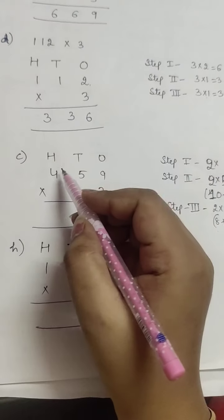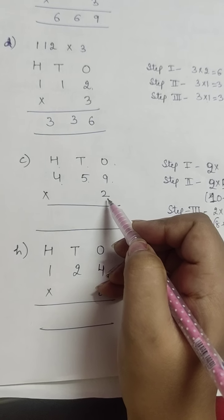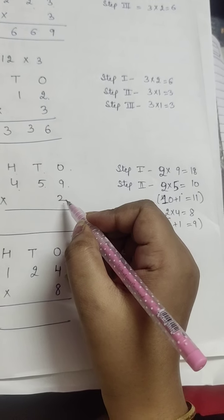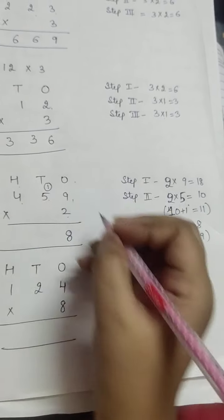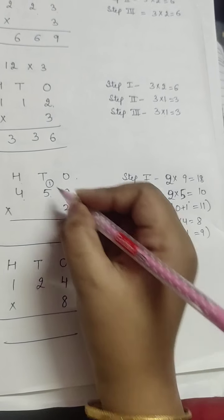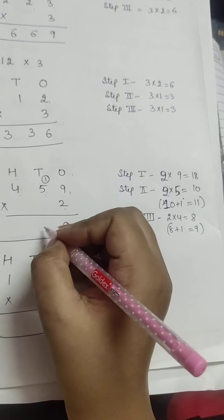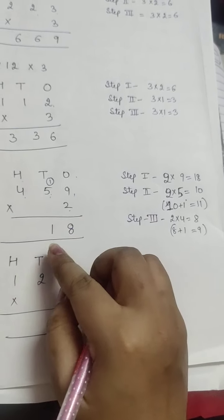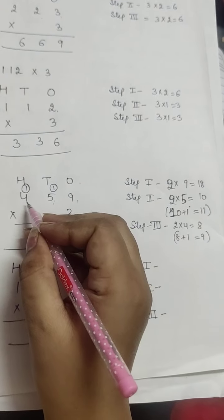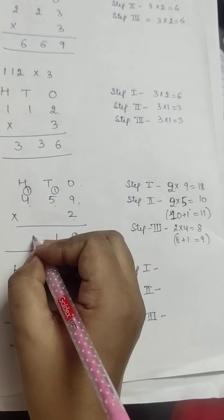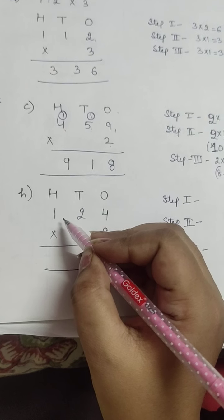For question 3, part C: 459 multiplied by 2. Your first step: multiply 2 and 9, you will get 18. Write 8 at the ones place and carry 1. Second step: 2×5 = 10, and 10 plus 1 carry = 11. Write 1 and carry 1. Then 2×4 = 8, and 8 plus 1 = 9. Is it clear?